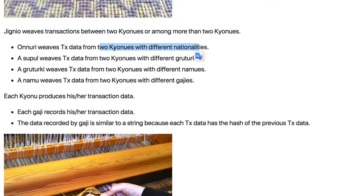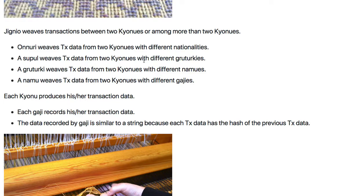For example, if there is a transaction and two traders are participating — one is from Korea and one is from China — then the transaction of those two market participants is handled by Onnuri. Similarly, if one is from the USA and one is from Washington.